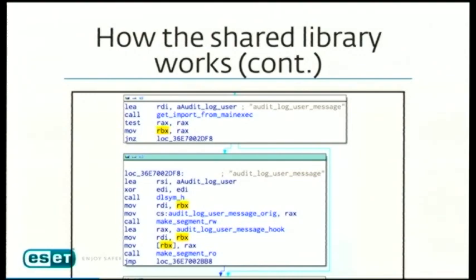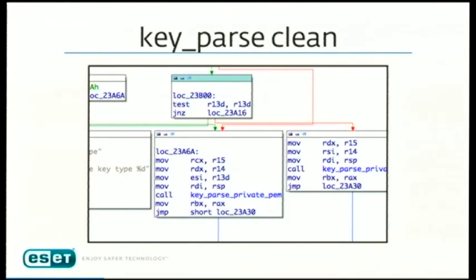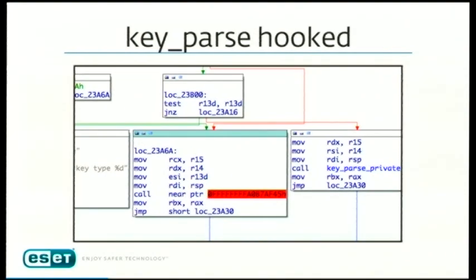What does it look like when analyzing a binary? A clean keyparse function calls keyparse_private_tem normally. But after hooking — and you need to extract it from memory since on disk it will show the good code path — it looks different: a pointer to an address where the function inside libkeyutils is loaded.